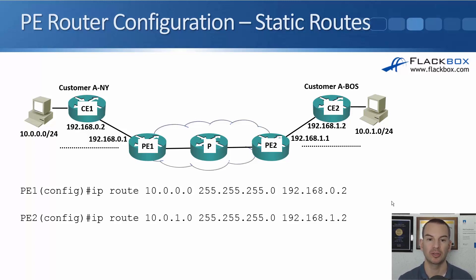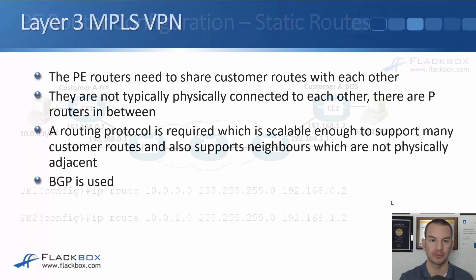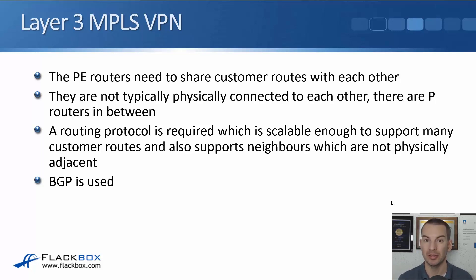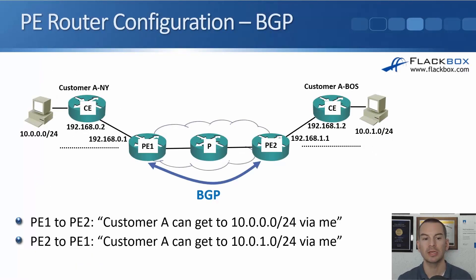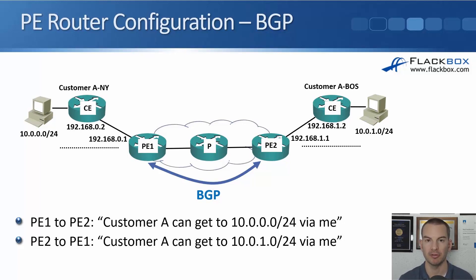PE1 and PE2 need to share their static routes with each other to get end-to-end connectivity. They are typically not physically connected — there are usually core P routers in between — so a routing protocol is required that is scalable enough to support many customer routes and supports non-adjacent neighbors. That sounds like BGP, and yes, BGP is used internally between the two PE routers. PE1 tells PE2 that customer A can reach 10.0.0.0/24 via PE1, and PE2 tells PE1 that customer A can reach 10.0.1.0/24 via PE2, giving full end-to-end connectivity.